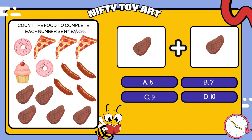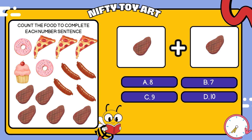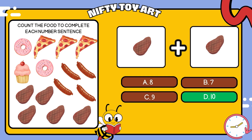We have steaks and steaks. How many foods is that in total? That's right, ten.